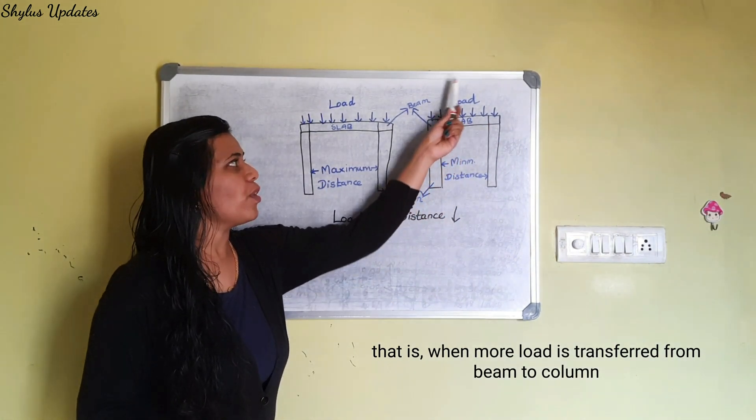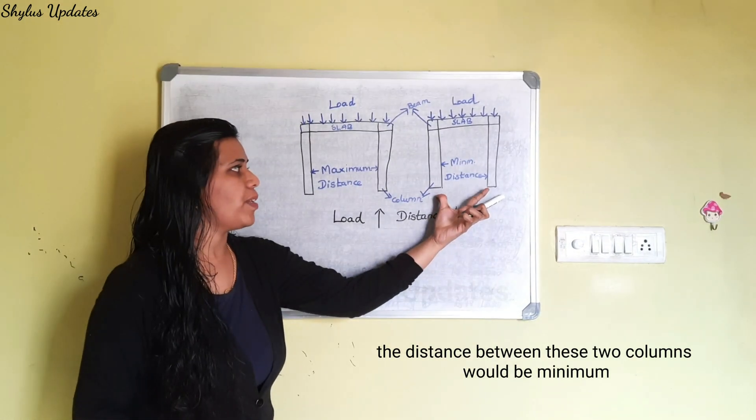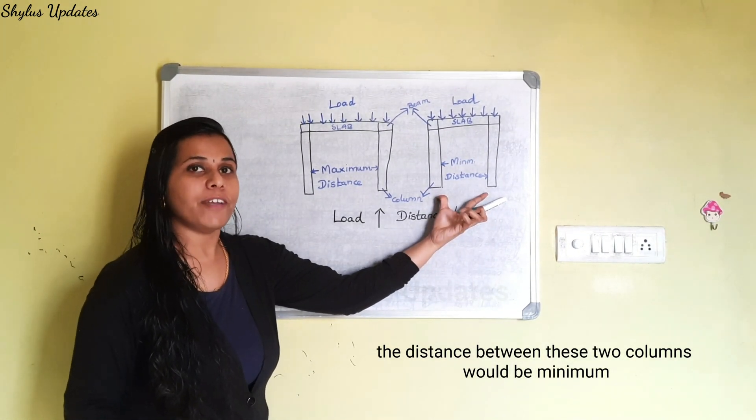That is, when more load is transferred from this beam to this column, the distance between these two columns will be minimum.